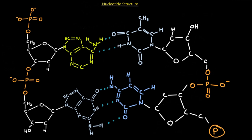Now let's look at complementary base pairing, because DNA exists as a double helix — specifically a double helix structure. RNA, by contrast, typically exists as a single strand without these hydrogen bonds, or simply as one strand. Even when RNA is synthesized as one strand, it can still form hydrogen bonds to other parts of the RNA molecule, making some strands, but they are not in the uniform anti-parallel arrangement found in DNA.